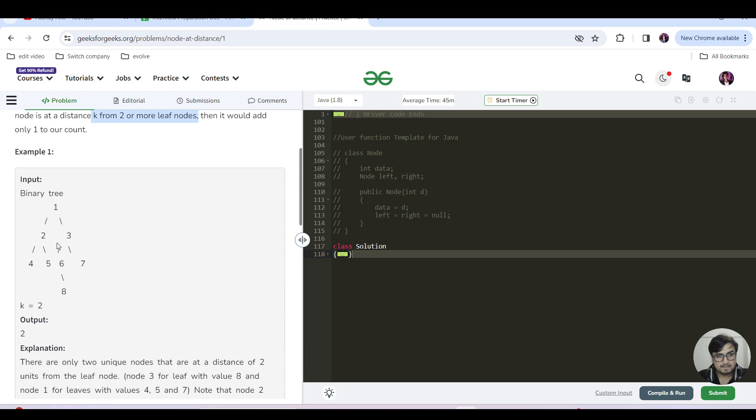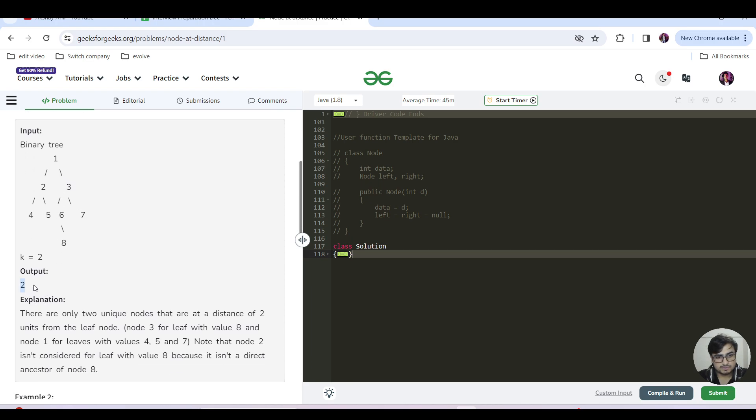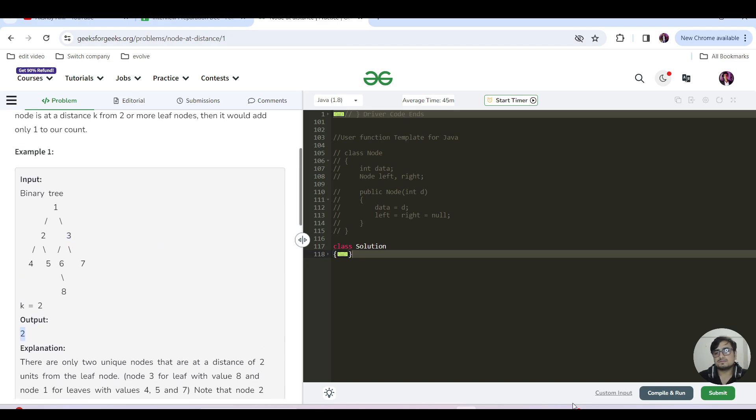For this case, you can clearly see that the output is 2. The explanation they're taking is that we have leaf nodes 4 and 5. At distance 2, this is distance 1, this is distance 2, right? So for node 4, I can see node 1 is at distance 2. For 5 also, node 1 is at distance 2. But we have to take just one instance, so we'll get one answer. Similarly, for the leaves with values 4, 5, and 7, there is node 1. That's why we have count as 1. And similarly, for this leaf node 8, we have a node present at k distance, which is node 2. That's why our output is 2.